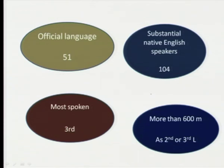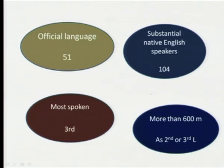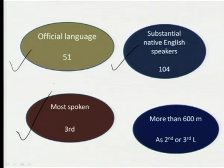Now, some facts about the English language — these facts may change from year to year, but taking an average from reliable sources: English is the official language in 51 countries. In 104 countries, there are a substantial number of native English speakers. If you look at the most spoken languages, English is not really the most spoken — Mandarin Chinese is the most spoken language in the world, and English occupies the third position. So in terms of usage, it occupies the third position.